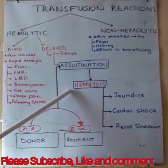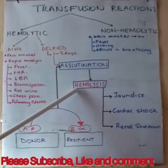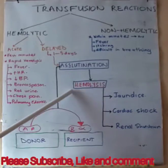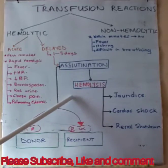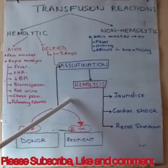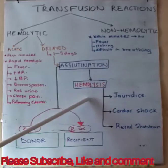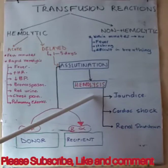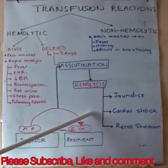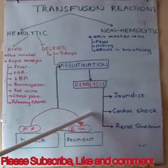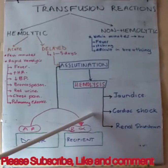What we are most interested in is the biliverdin pathway. From heme, we get biliverdin, and from biliverdin we get bilirubin. If the level of bilirubin is higher than 2 milligrams per deciliter, jaundice will develop. This is the first complication.